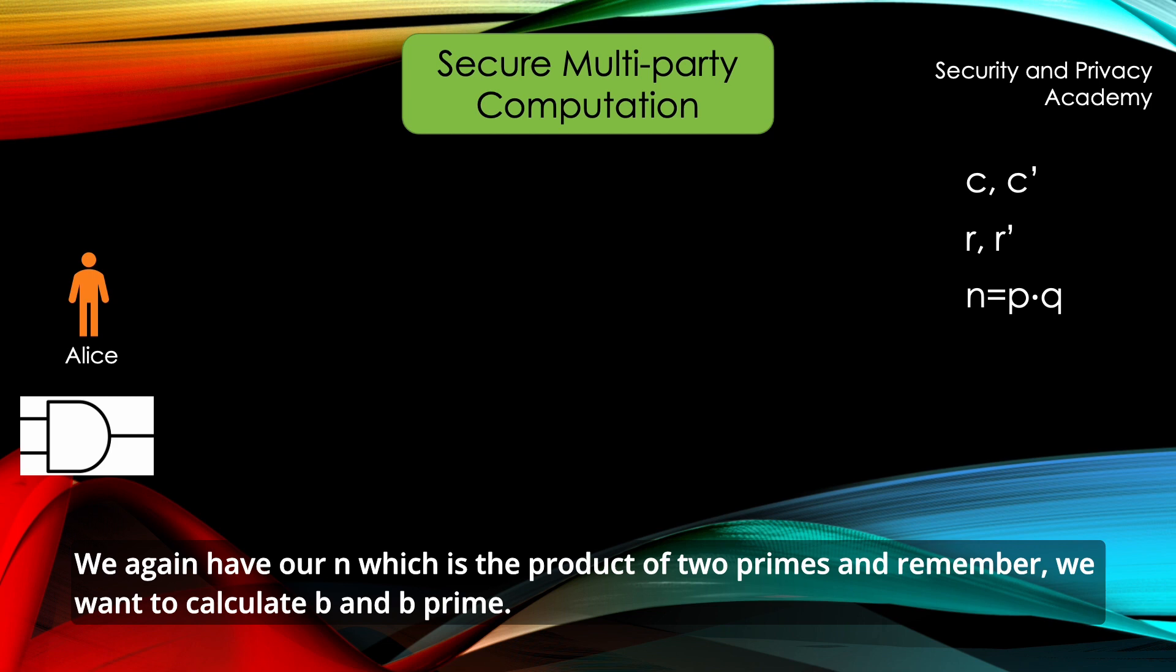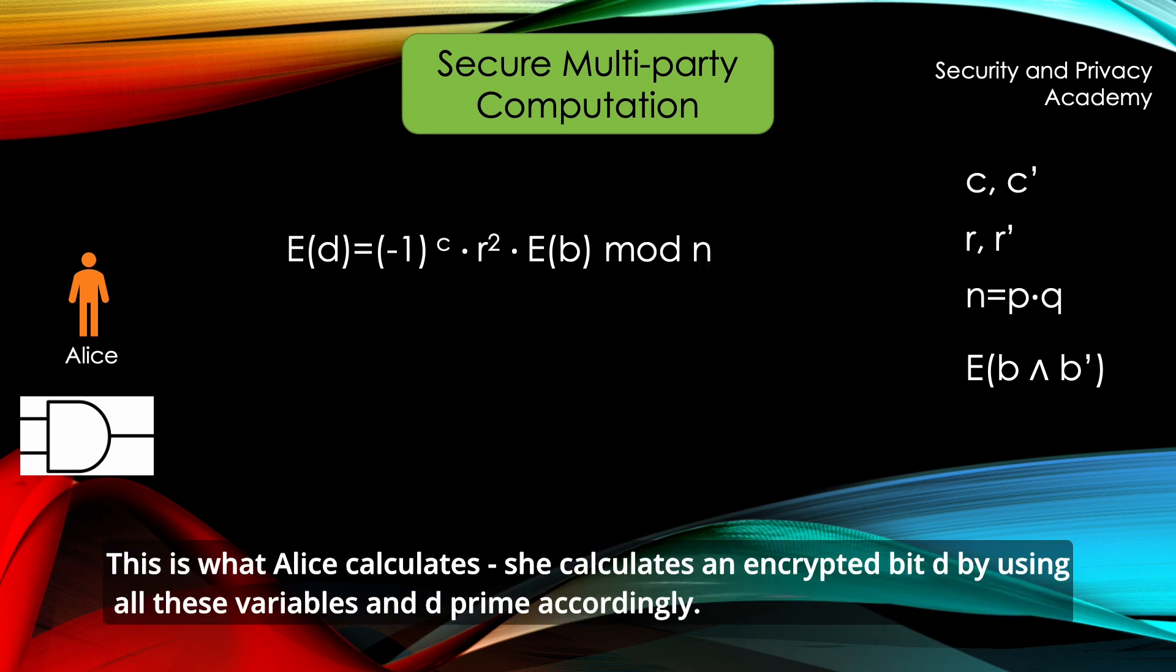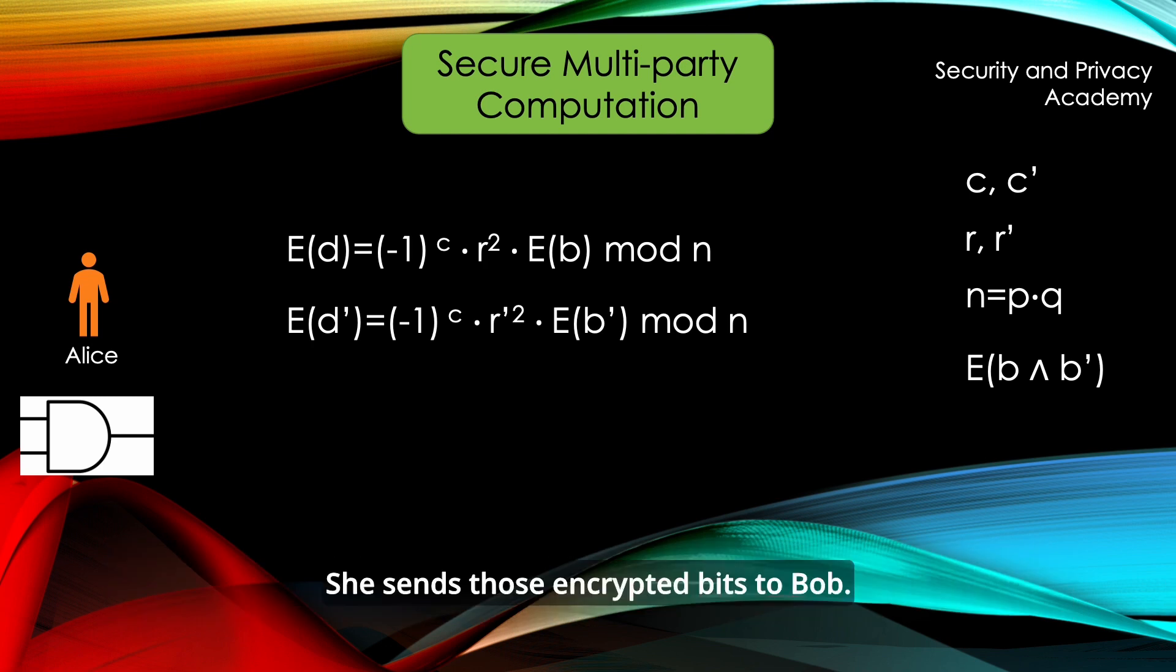This is what Alice calculates. She calculates an encrypted bit D using all D variables and D' accordingly. She sends those encrypted bits to Bob.